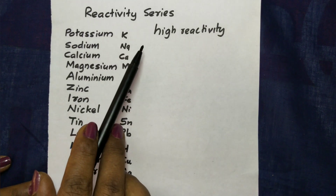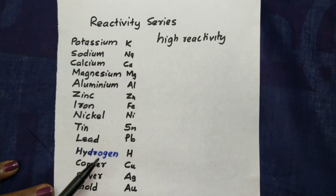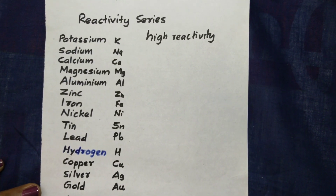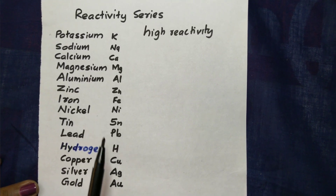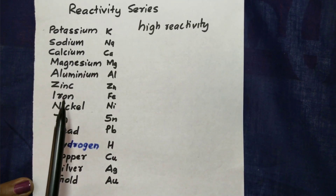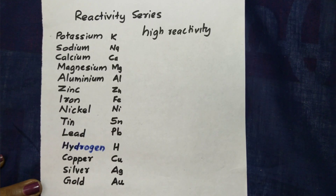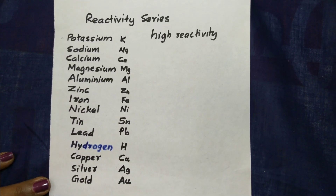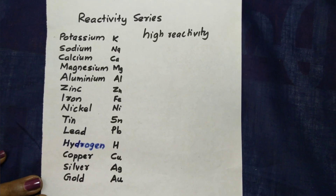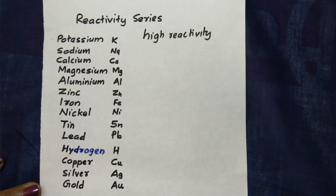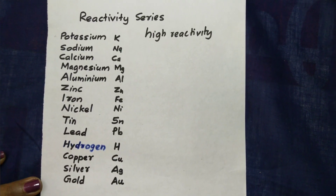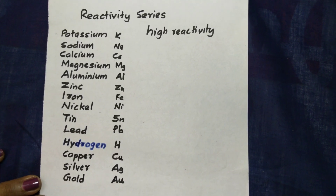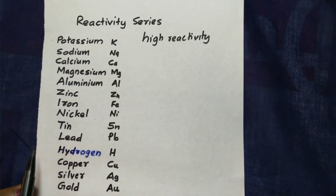This is the decreasing order of reactivity — high reactivity at the top and low reactivity at the bottom. We arranged metals in a short way using the activity series. This is the activity series — sometimes called the D&D activity series — where metals are arranged from most to least reactive.